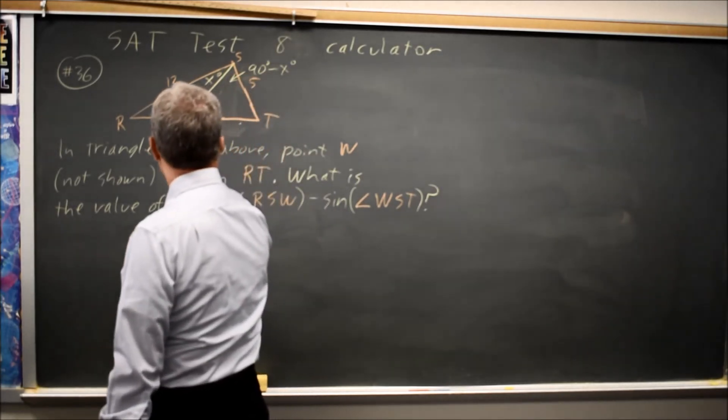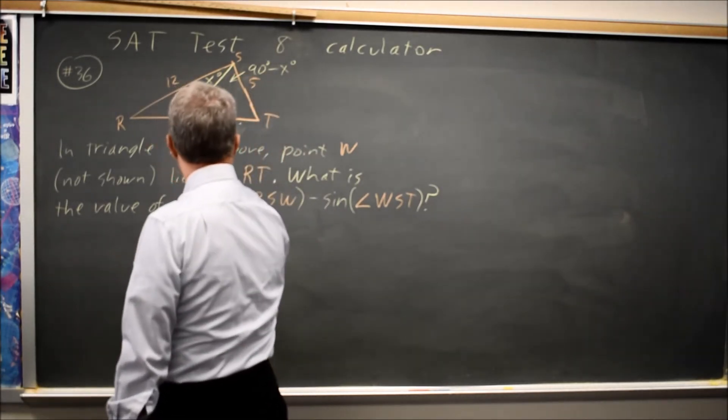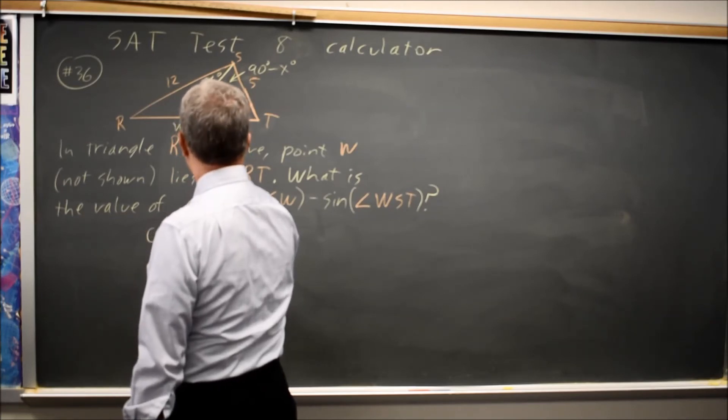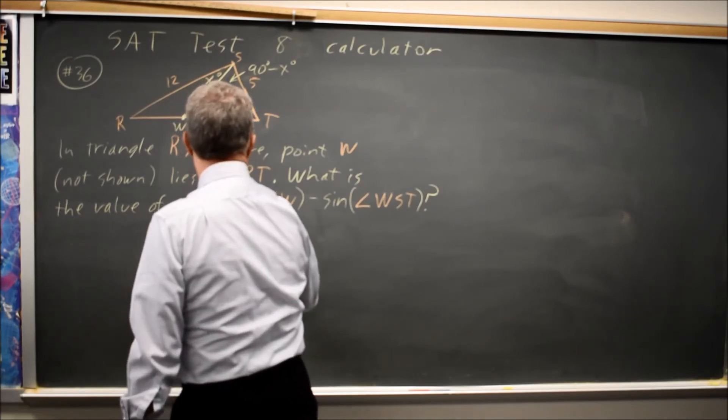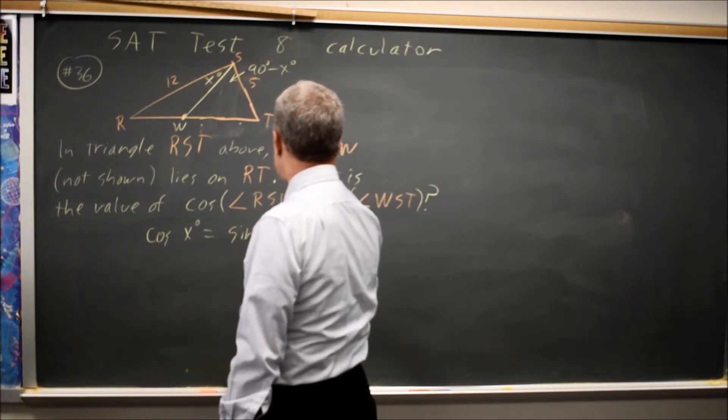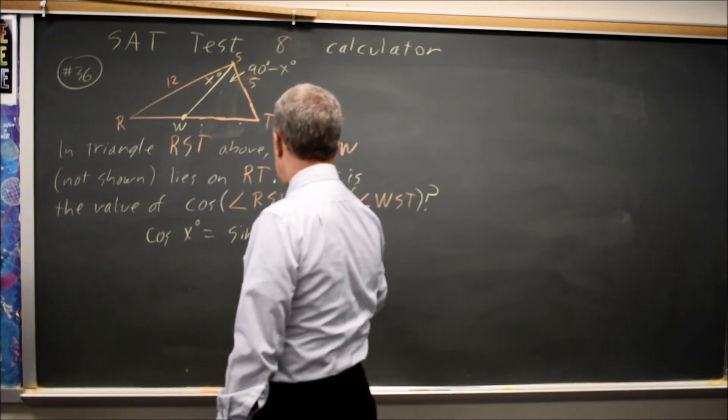And what I'm saying is the cosine of X degrees equals the sine of 90 minus X in degrees.